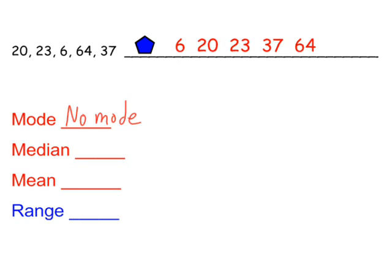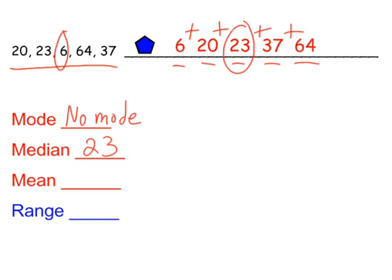The median is the middle number, and because the numbers are all in order, it's easy to find the middle. 23 is our middle number. A common mistake students make is not putting the numbers in order from least to greatest and just circling whatever number is in the middle — six would not be your median for this data set. Now for the average: if we add up all five numbers — 6, 20, 23, 37, and 64 — that adds up to 150. We divide by five because there are five numbers in our data set, so our mean, or average, is 30.